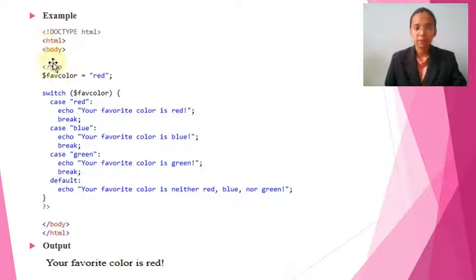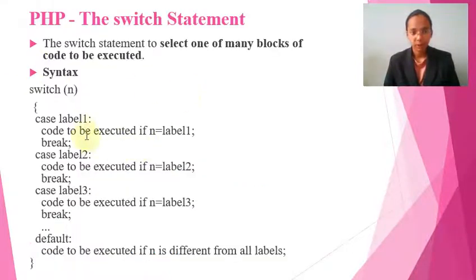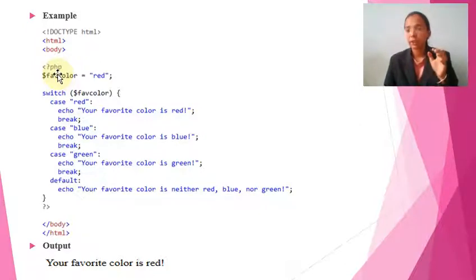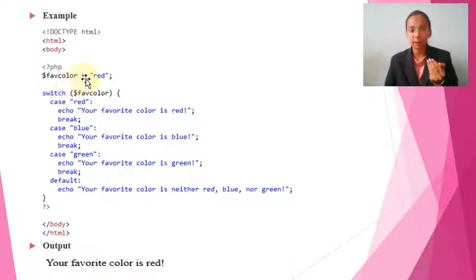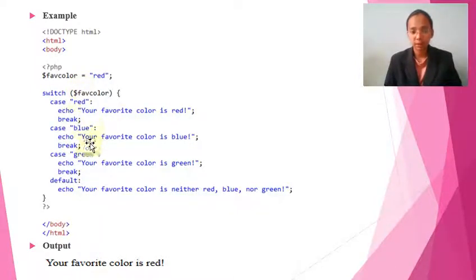Let us look at the example. We have the HTML tag, body tag, and PHP. A variable 'favoriteColor' is assigned the value 'red'. Inside the switch, we put 'favoriteColor' — so the value is currently 'red'. It goes to case 1, checks if it is 'red' — yes, so it prints 'Your favorite color is red' and then breaks. It does not go to case 2 (blue) or case 3 (green) since the match was already found in case 1.